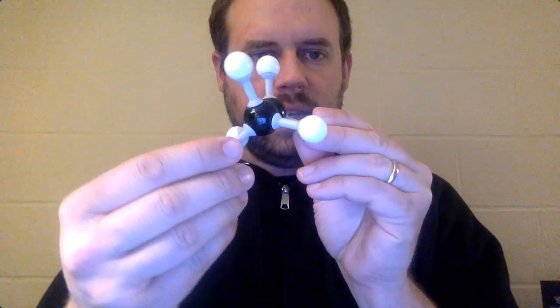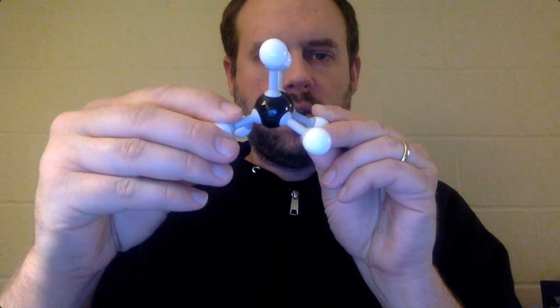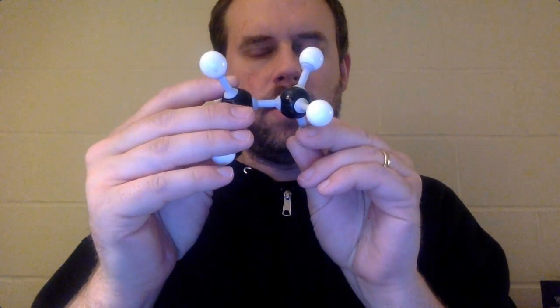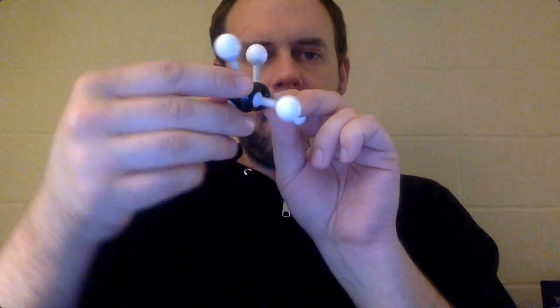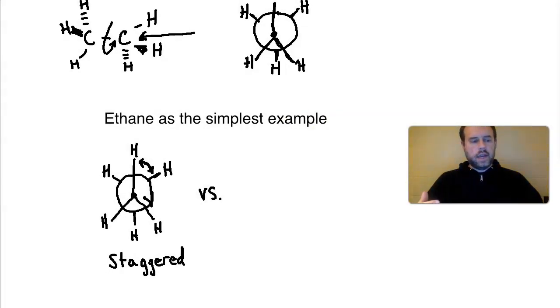Instead of a staggered formation, as the groups continue to align they eclipse one another — lined up so closely you can barely distinguish the front and back carbon. In the staggered form you can clearly see the difference between front and back; in the eclipsed form they overlap. Free rotation around the single bond means the molecule constantly moves back and forth between staggered and eclipsed forms. The eclipsed conformation is drawn with substituents very close together, almost overlapping.